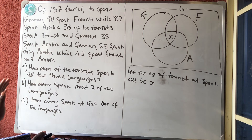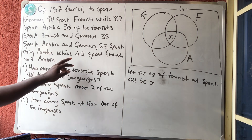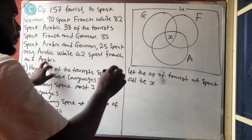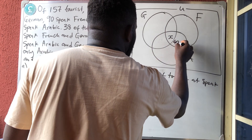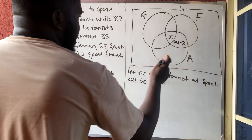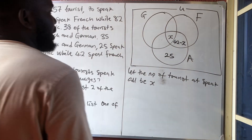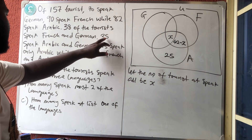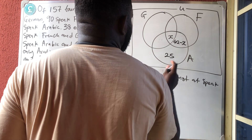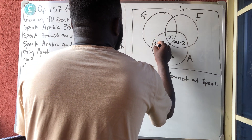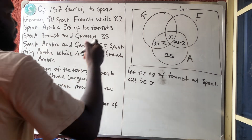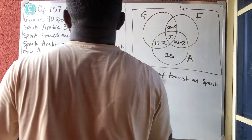We start from the three-language region, then go to the two-language regions. They said 42 speak French and Arabic — no 'only', so we write 42 minus x. For only Arabic, they said 25 with 'only', so we write 25 as-is. For Arabic and German, 35 without 'only', so we write 35 minus x. For French and German, 38 without 'only', so we write 38 minus x.